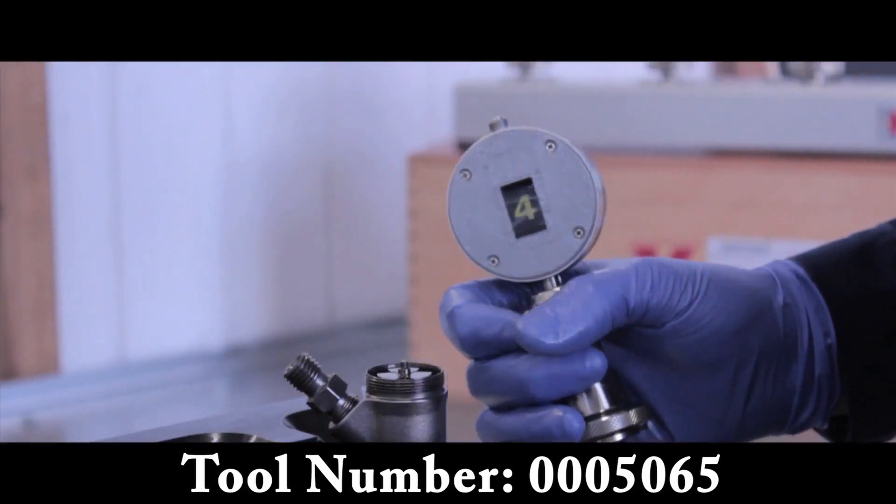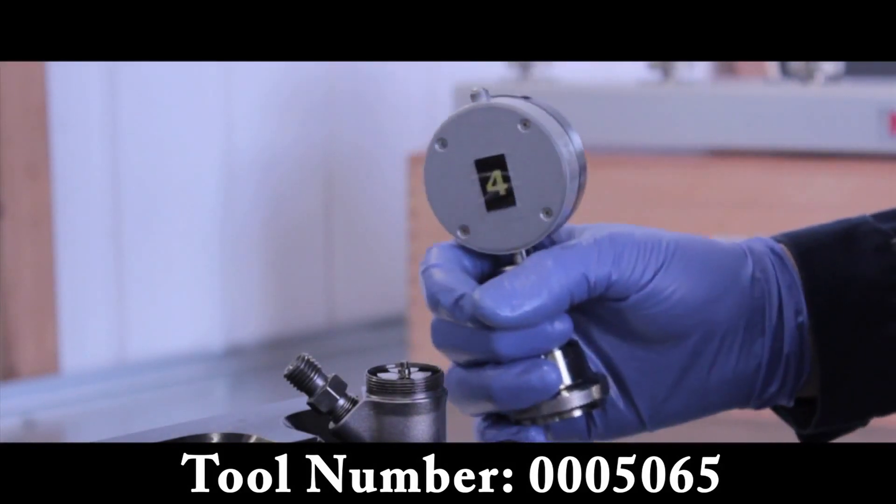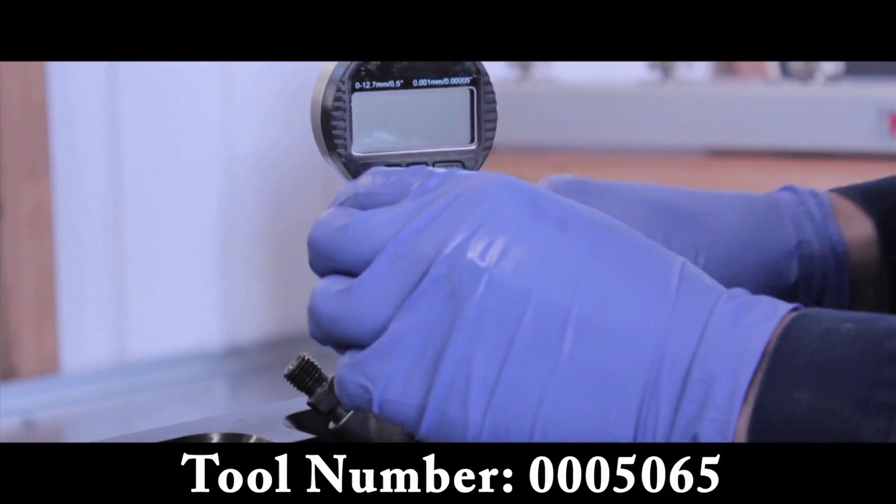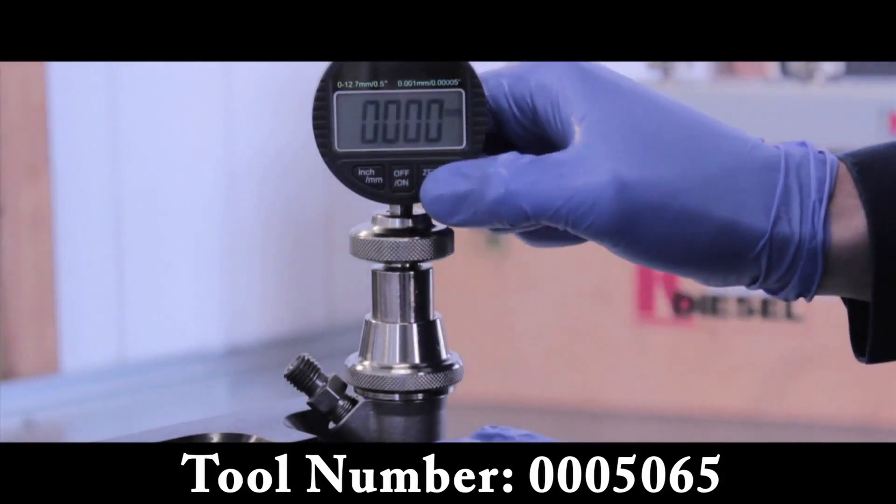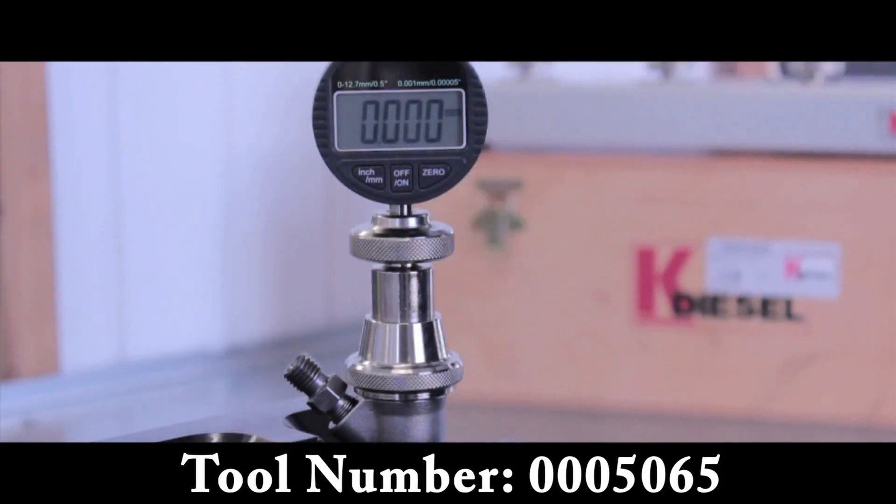The final gauge, number four, is used for checking the stroke of the ball valve. Again, we just slot it into place, switch it on, make sure it's zeroed, then simply press the top. That's your figure.